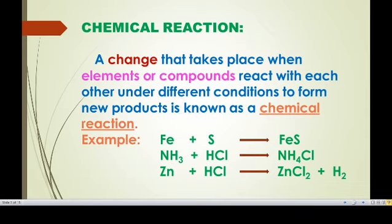Let us take few examples. First, iron reacts with sulfur to produce iron sulfide — both iron and sulfur are elements, so two elements react together to produce a compound. Second, ammonia reacts with hydrogen chloride and produces ammonium chloride — both ammonia and hydrogen chloride are compounds, so two compounds react to produce a new compound. Third, zinc reacts with hydrogen chloride and produces zinc chloride and hydrogen gas. Here zinc is an element and hydrogen chloride is a compound.